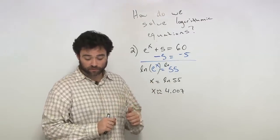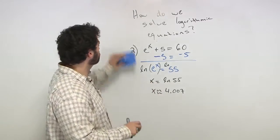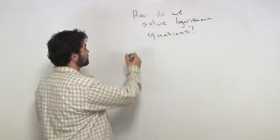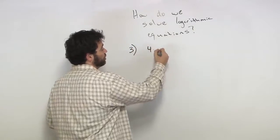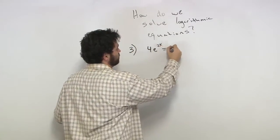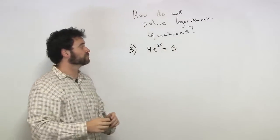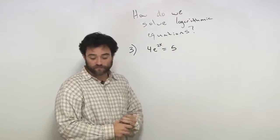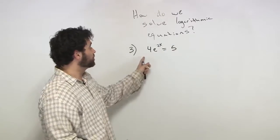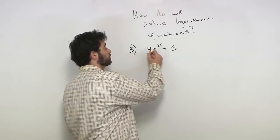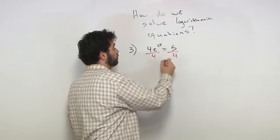Just again, we're solving logarithmic equations. And question number three says 4e to the 2x equals 5. What to do first? Again, get rid of that 4. Get the e to the x by itself. In this case, it's e to the 2x. Divide out that 4. There goes 4. There goes 4.